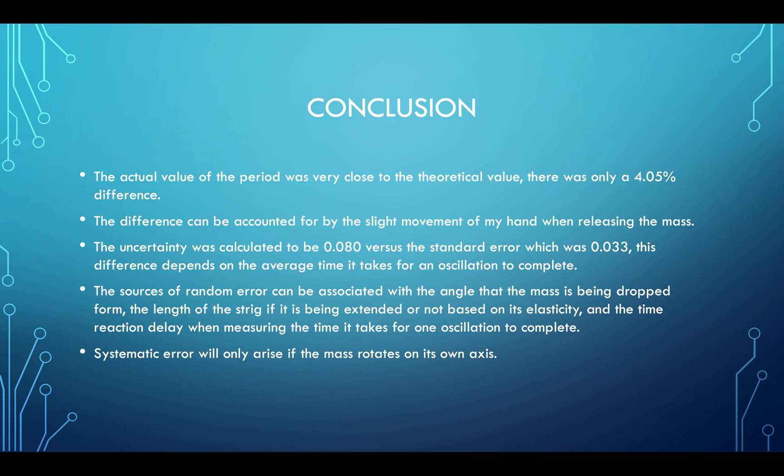The sources of random error can be: the angle that the mass is being dropped from, it might have been plus or minus one degree every time with my hand. The length of the string could also have been extended based on the string elasticity—it was not fully a stiff string or a fully elastic string. The time or reaction delay when measuring the time it takes for an oscillation to complete can also change based on the reaction time of the observer that is stopping the stopwatch. Lastly, the systematic error will only arise if the mass rotates on its own axis.